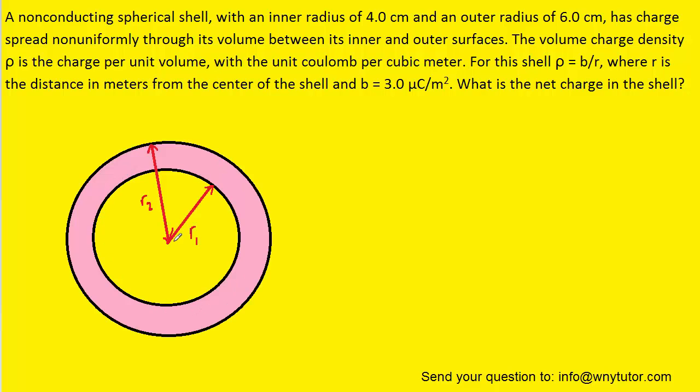So here we have the spherical shell. It has an inner radius that we've marked R1 and an outer radius marked R2. What we need to consider is an expression for the amount of charge that would be present in a very thin shell. Because that shell is very thin, we could call its thickness dr. And the amount of charge present in that thin shell would be dq. We're using the differential notation because these are very tiny quantities.